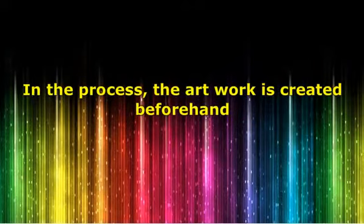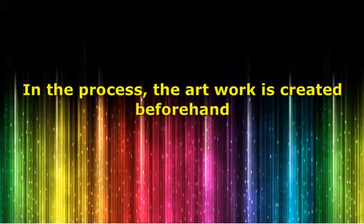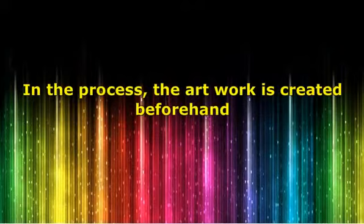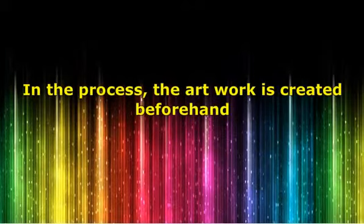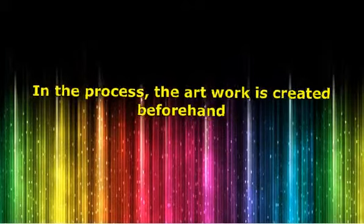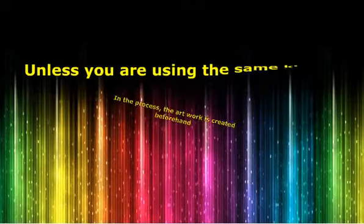The screen is mounted on a box, and the shirt on which the screen print will be done is placed under the box. After pouring down the ink, it is forced through the mesh with the help of a tool named a squeegee. The ink is left to dry and the image is printed on the t-shirt. This method is used for single color designs.